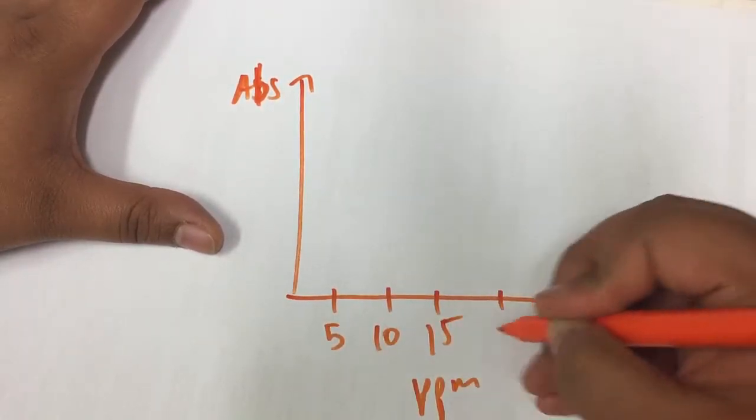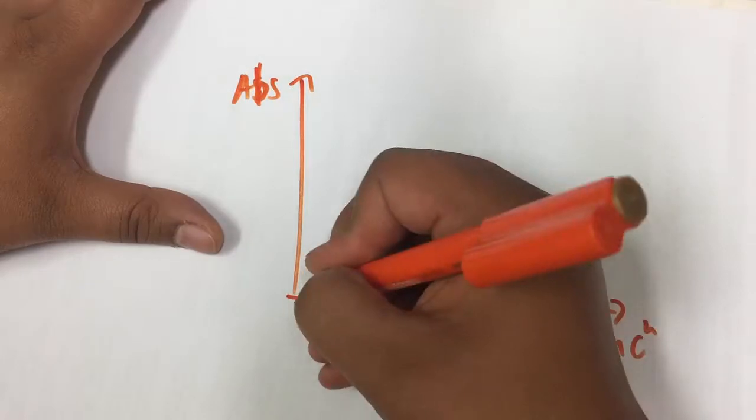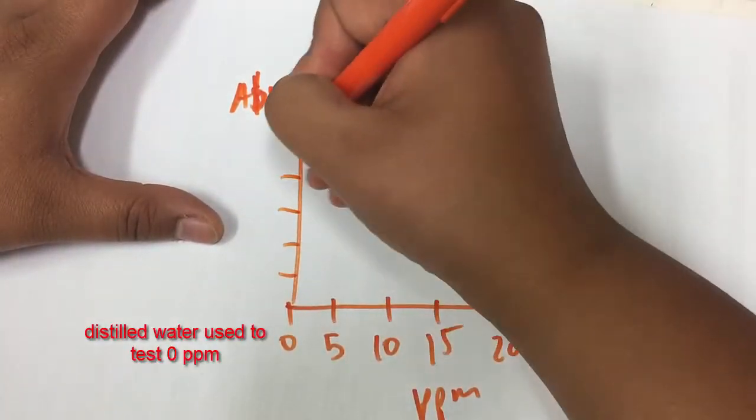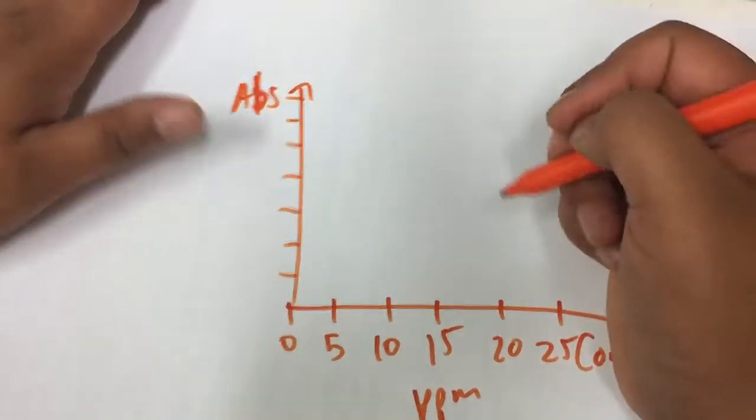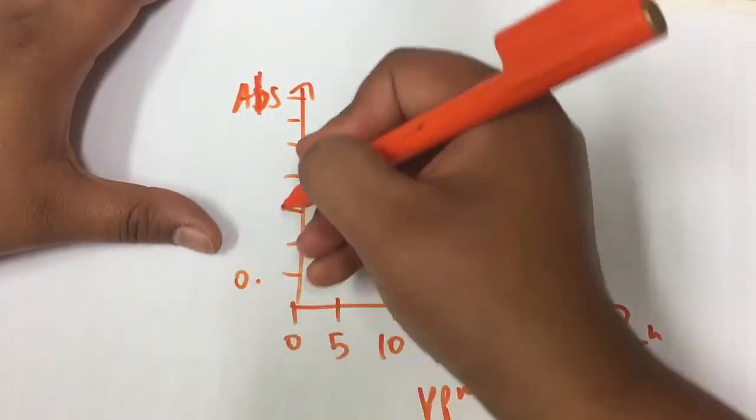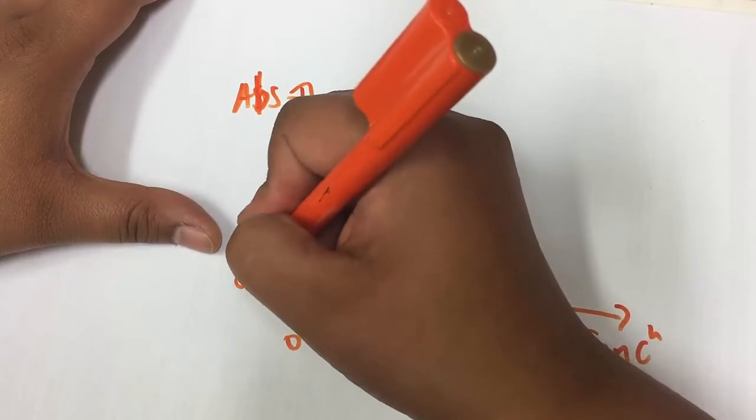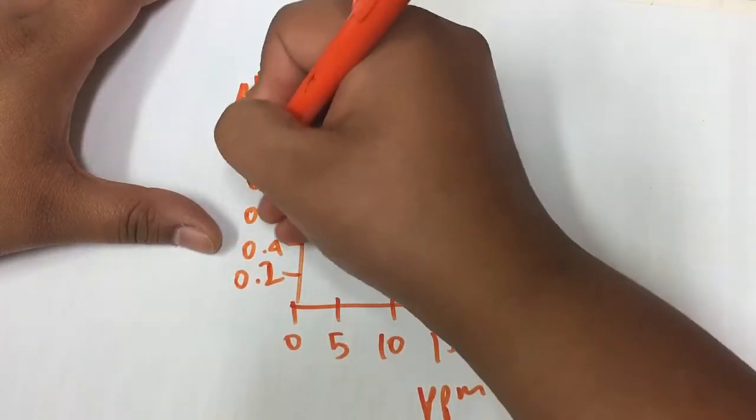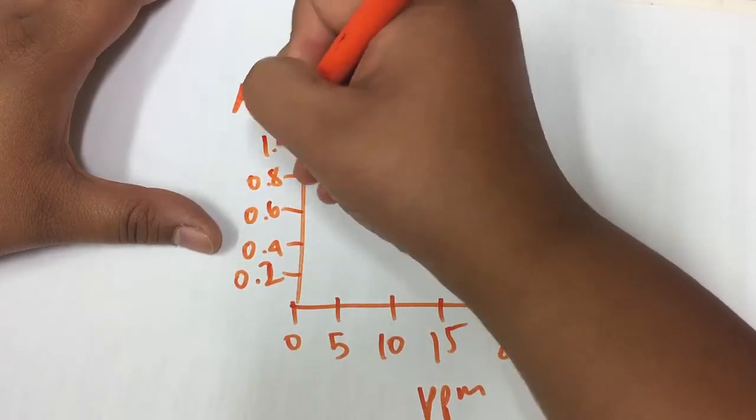So let's just say this is 5 ppm, 10, 15, 20, 25, and that's 0. And then we have our absorbance. Now, while absorbance doesn't normally have units, it is common to have something like 0.2, 0.4, 0.6, 0.8, 1, etc.